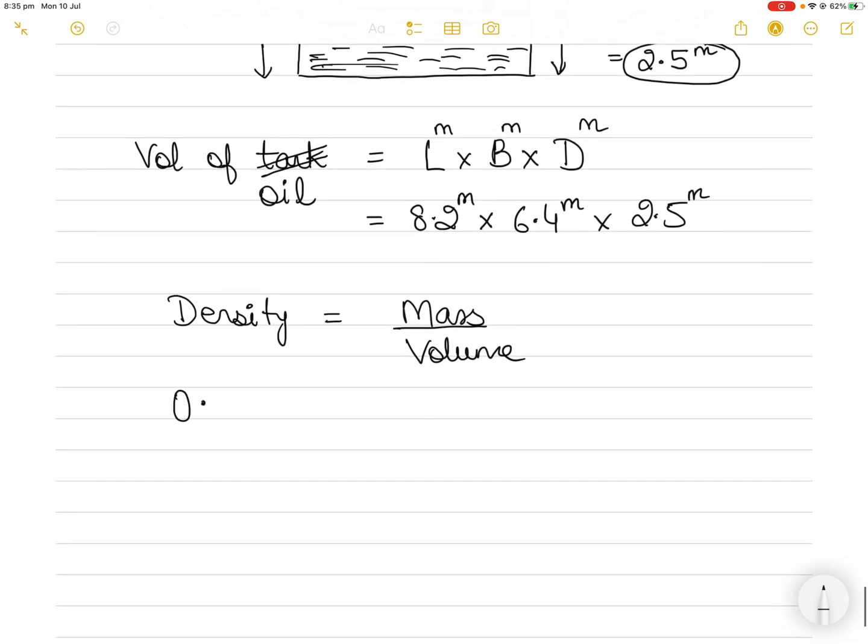So we will write here 0.85 ton per metric cube or divided by metric cube. Then mass is what we have to calculate. So this is the unknown and the volume is the same as this here. So we will multiply 8.2 by 6.4 by 2.5 each of which is of course in meters.